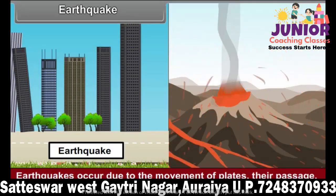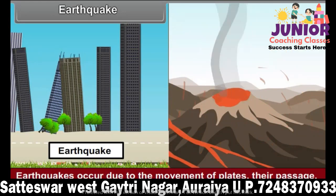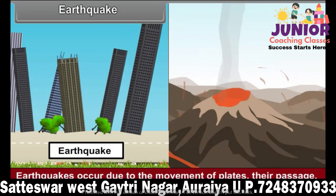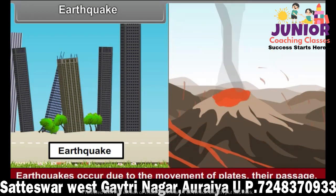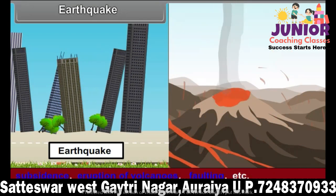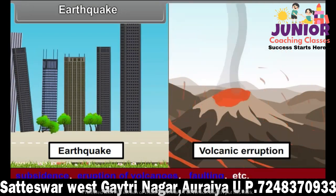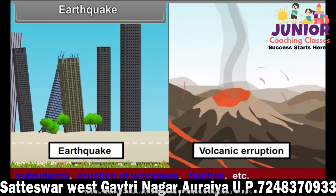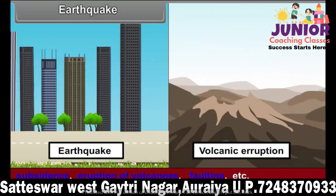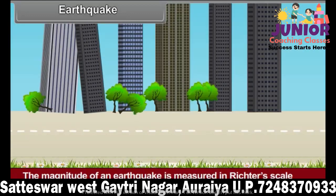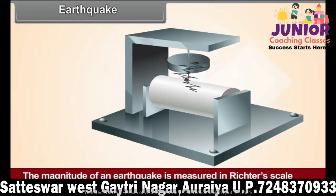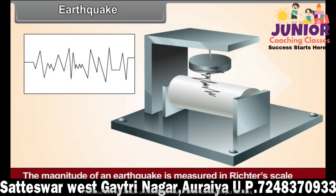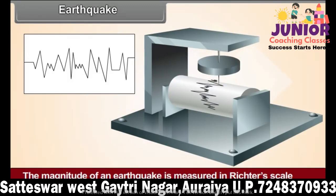Earthquakes occur due to the movement of plates, their passage, their collision with one another, subsidence, eruptions of volcanoes, faulting, etc. The magnitude of an earthquake is measured on the Richter scale with the help of an instrument called a seismograph.